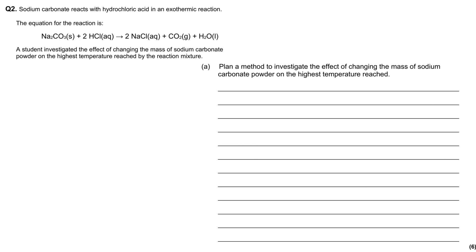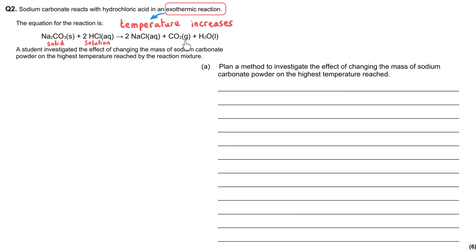Sodium carbonate reacts with hydrochloric acid in an exothermic reaction — that means the temperature will increase during this reaction. The equation for the reaction is Na₂CO₃ (solid) reacts with 2 moles of HCl (aqueous), and that turns into 2 NaCl (aqueous), carbon dioxide gas, and liquid water.